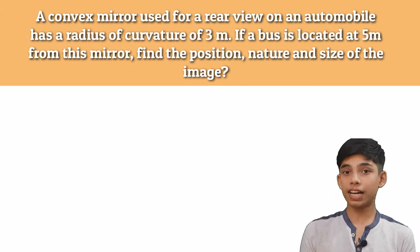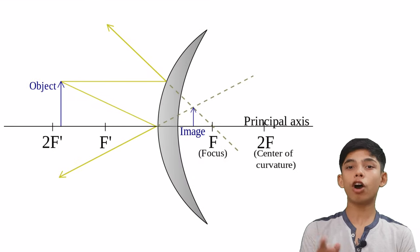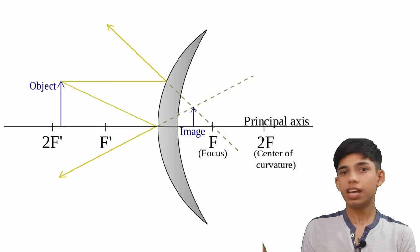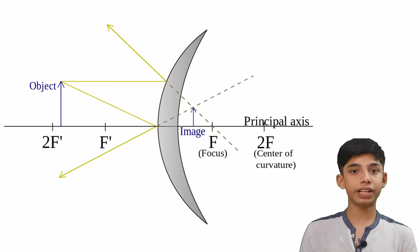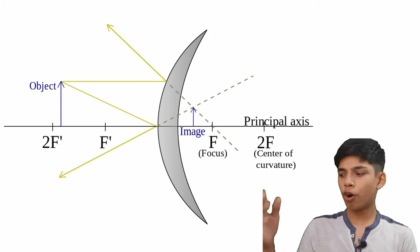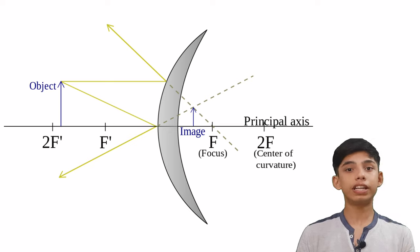But before starting solving this, there are some things which I want you to understand. So let's see this. So here you can see we have a convex mirror. Our object is on the left side and our image is forming on the right side of the mirror. So what I am trying to tell you is that if your object is on the left side, then it doesn't matter wherever you keep the object. Let's say on the 2F or between F and 2F or at the F, it doesn't matter. The image would always be on the right side of the mirror.